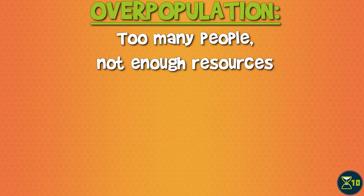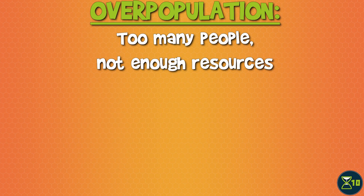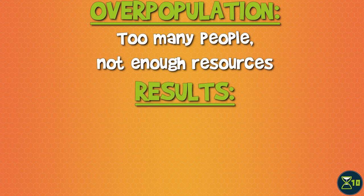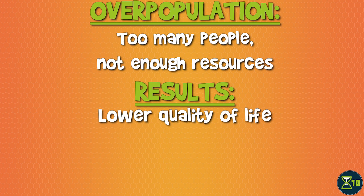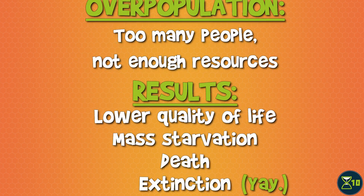Broadly speaking, you have overpopulation when you don't have enough resources to support all the individuals in a population. At the very least, this means a diminished quality of life for part or the entirety of the population. Depending on the severity of the problem, it may also mean mass starvation, death and extinction.